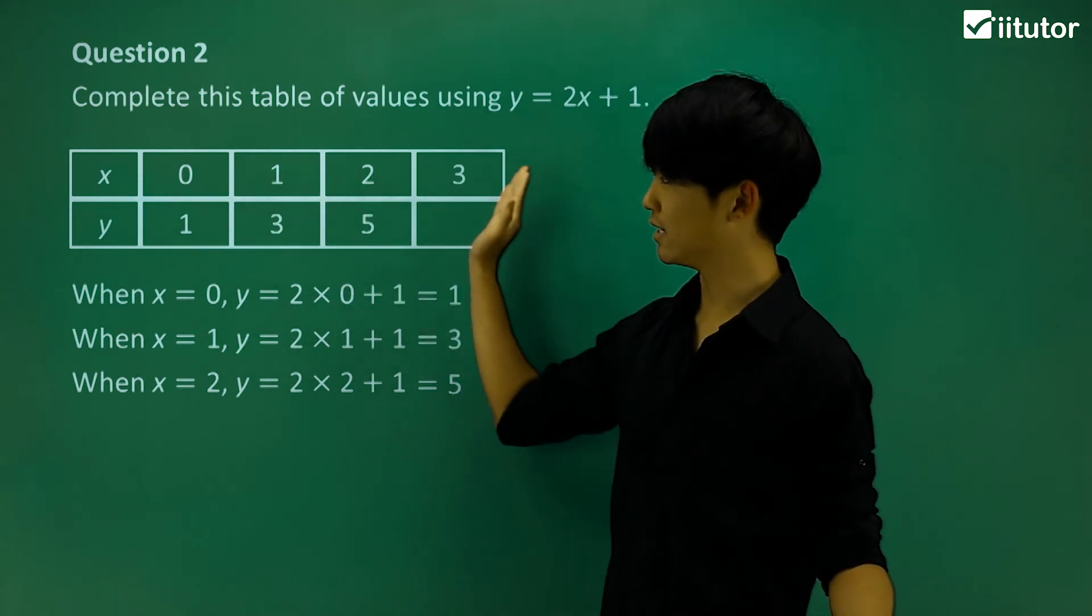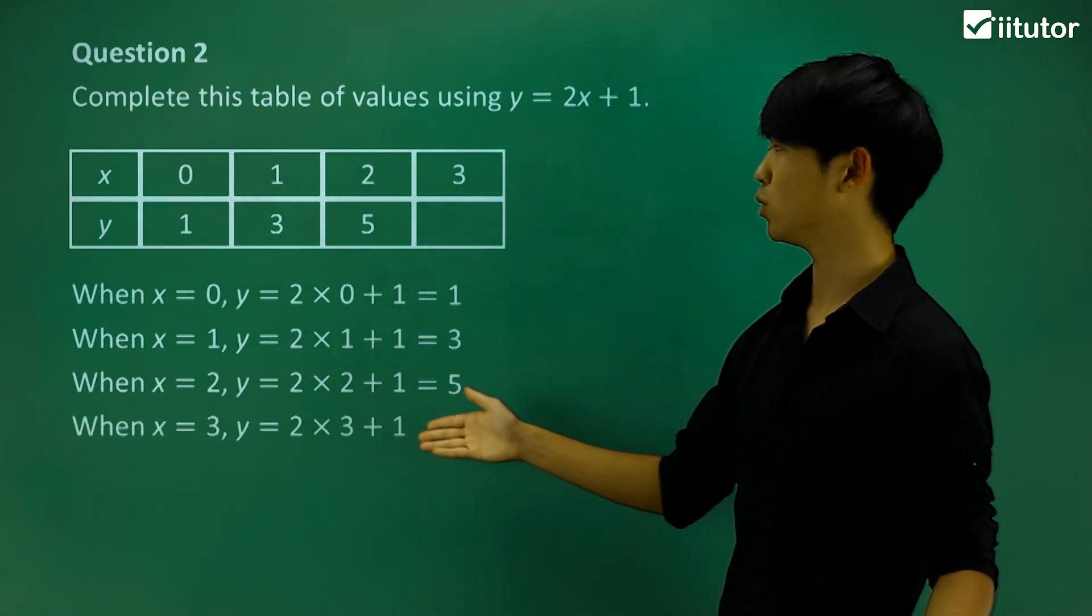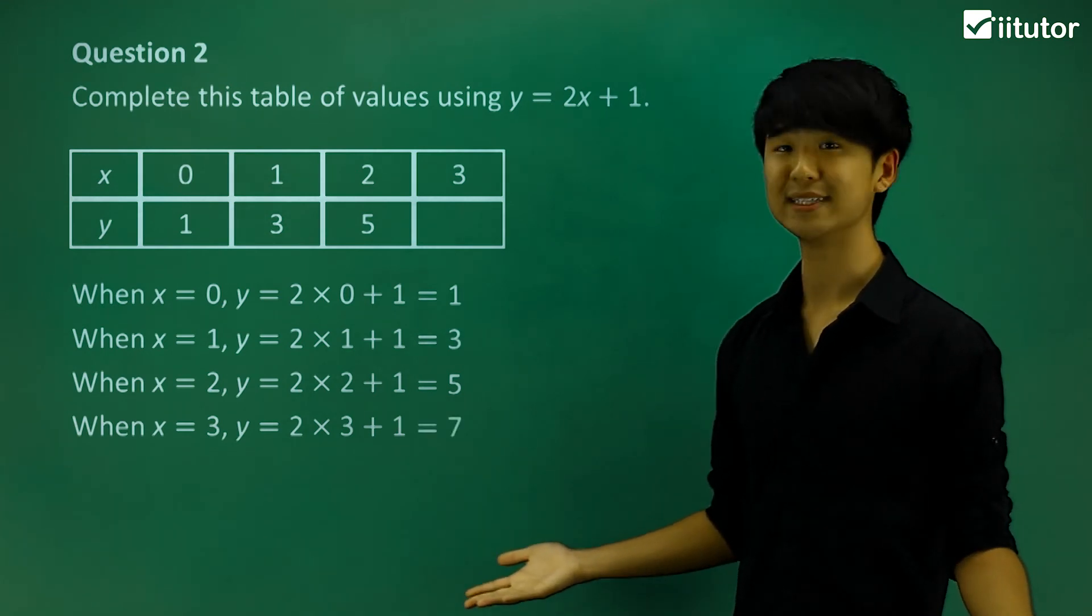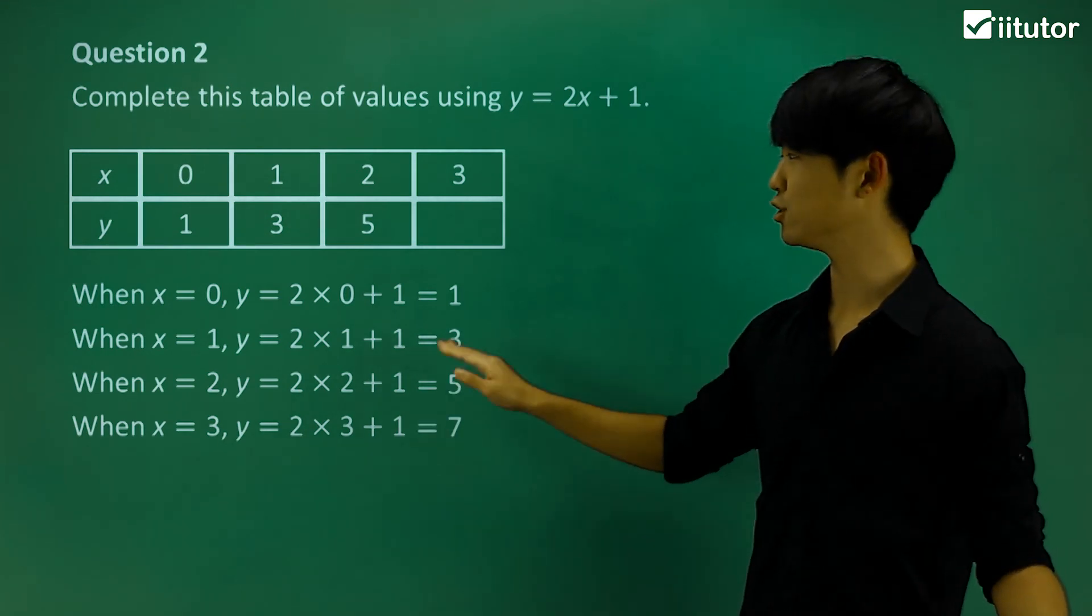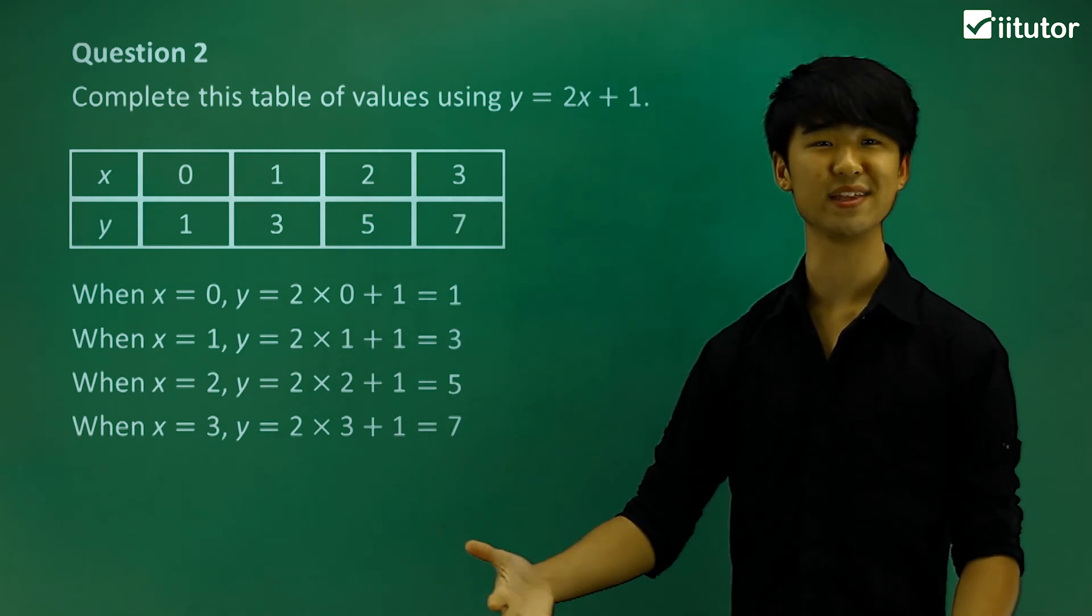You can see that as x goes up, y should also have some specific pattern. In the last one, when x equals 3, y should equal 2 times 3 plus 1, which in this case is 7. Make sure that we don't forget to write it in there. So that's how we complete the table of values.